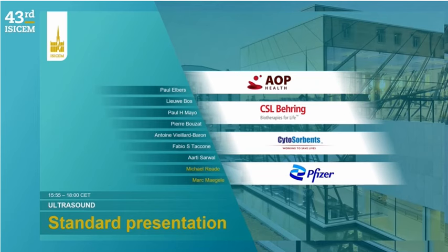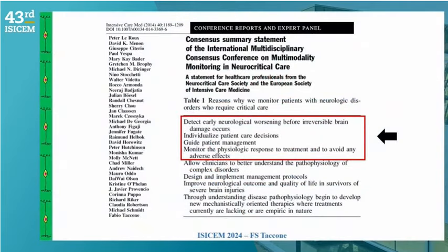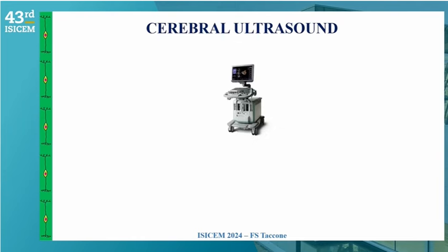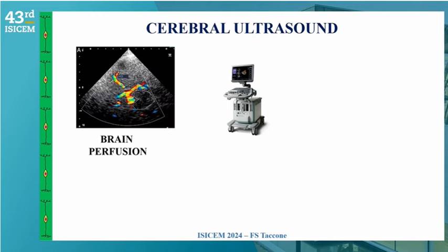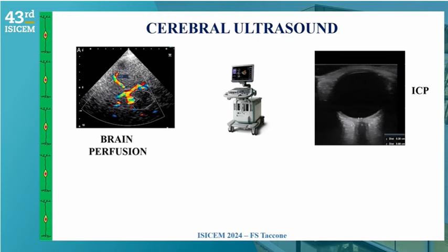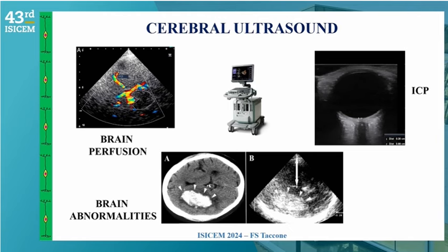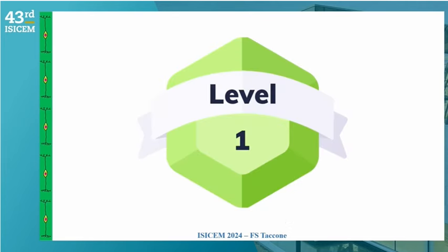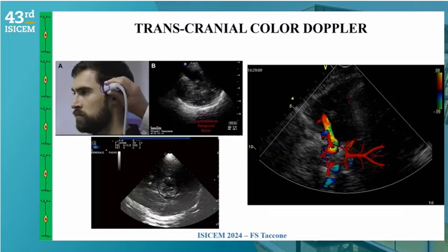Our next speaker, Fabio Taccone from Brussels, will talk to us about ultrasound and the brain. The concept of monitoring the brain is challenging clinically because it's enclosed in the skull — we need to combine different monitoring tools to better understand what's going on, particularly in patients suffering from acute brain injury. If you have an ultrasound, which is the case in most ICUs, you can try to estimate brain perfusion, estimate elevated intracranial pressure, and if you're very skilled, look for brain abnormalities. I'll outline five steps with increasing skill acquisition that ICU physicians might use for brain ultrasound.